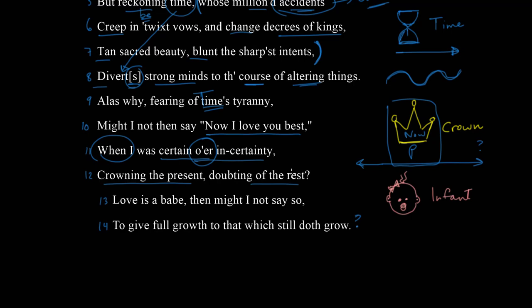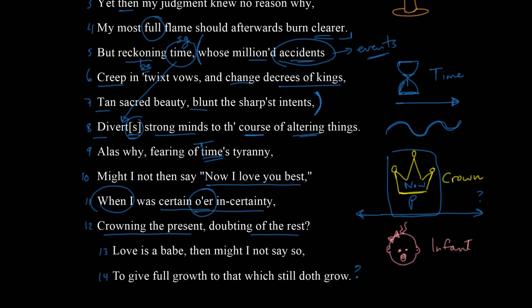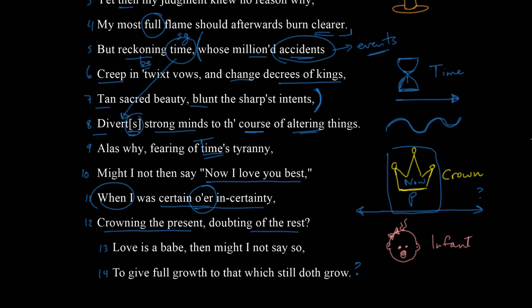Before we look at the last couplet, we should think back to the beginning, where he said 'those lines that I before have writ do lie.' That seemed very certain, which is ironic given this language of certainty. But if we now look at this quatrain, it's almost like he's actually changed his mind — he's going back and saying, well, maybe they were lies, but that's the best I could do. I didn't know what the future was going to bring, so maybe it wasn't a terrible lie. What's remarkable is that the sonnet actually seems to change course — it starts with a strong claim and then undercuts that claim over time, which is very appropriate in terms of what the sonnet is about.